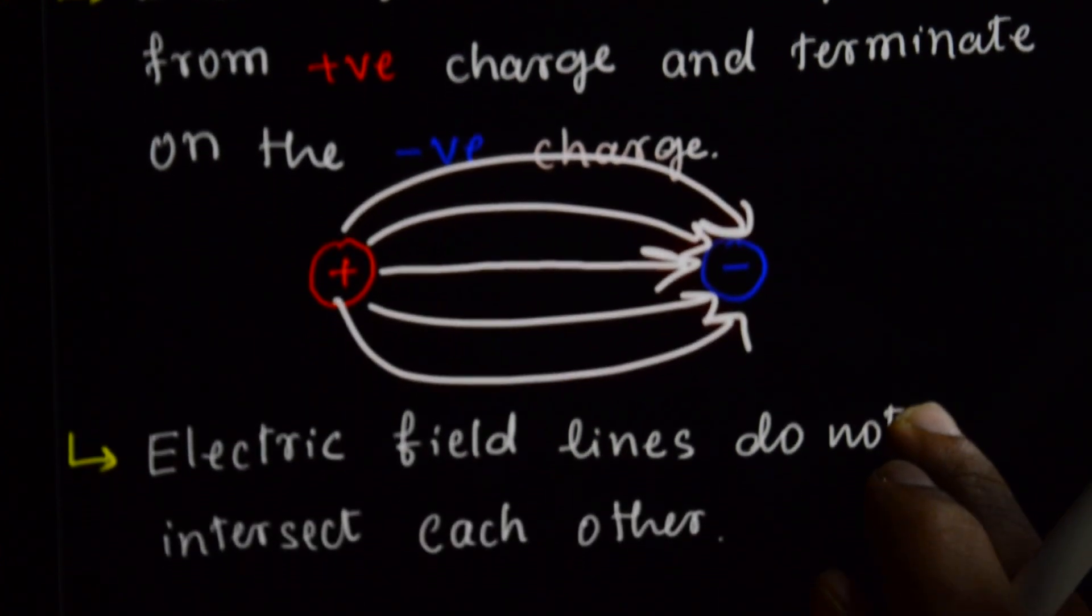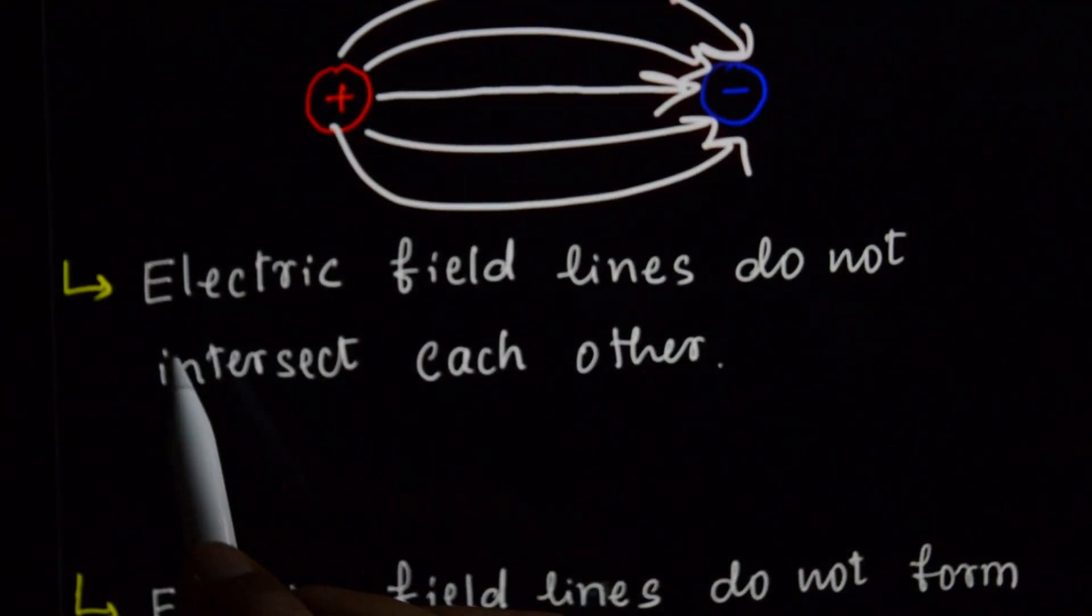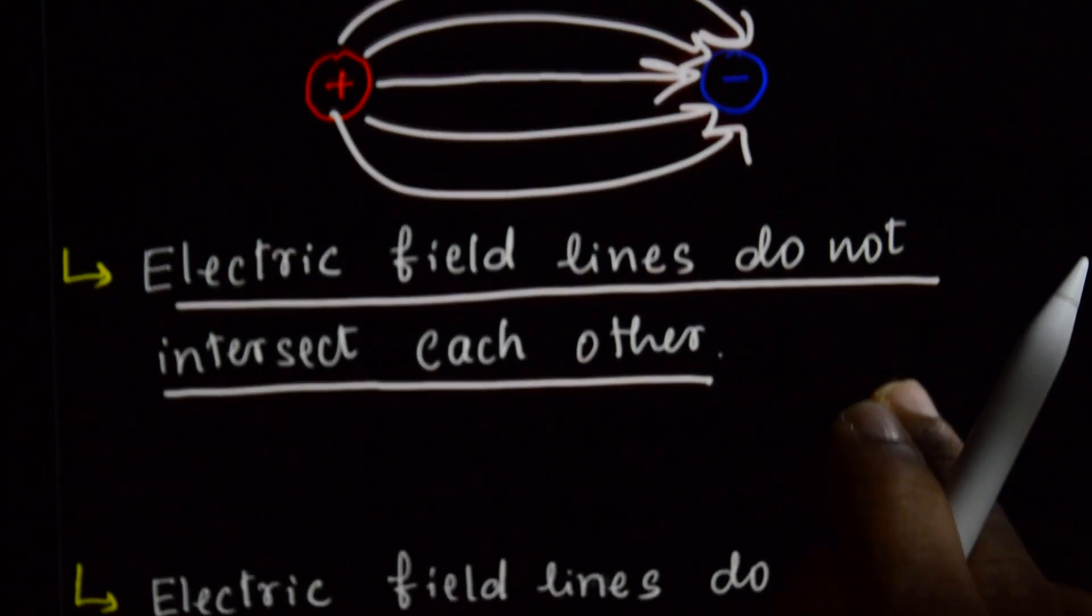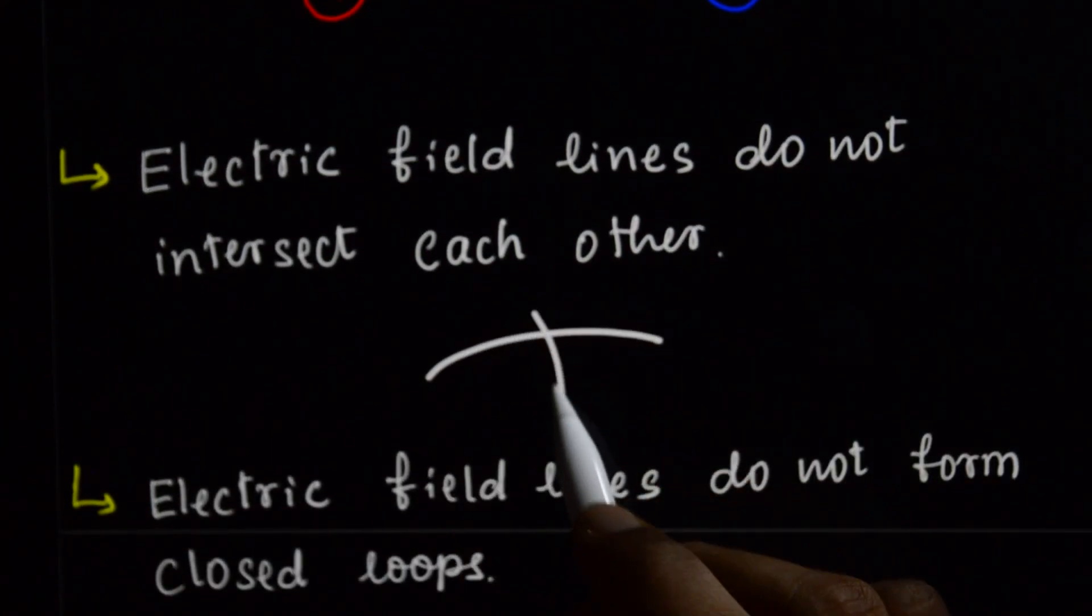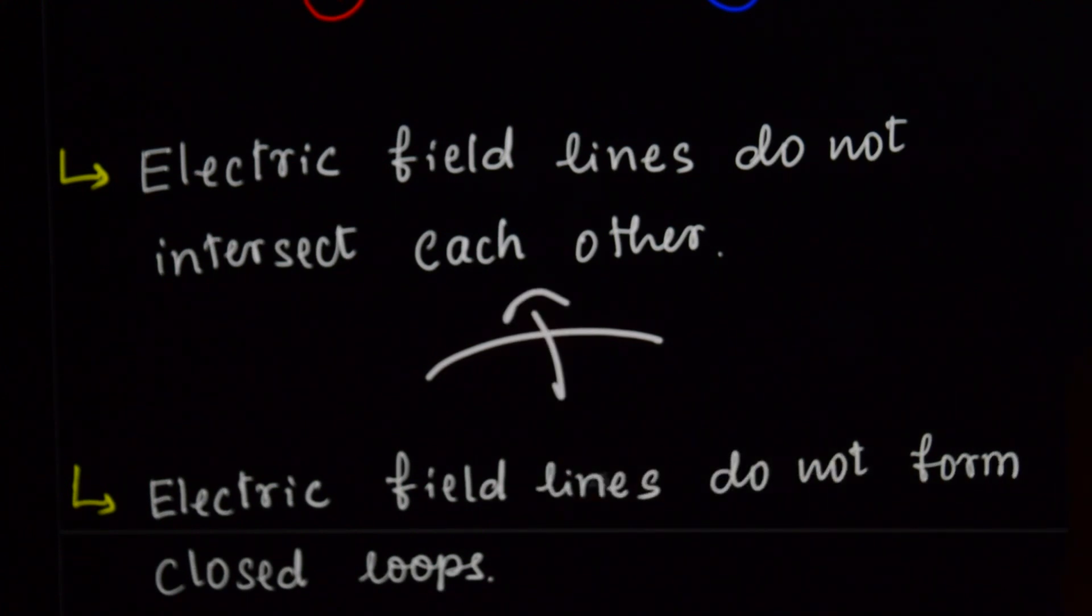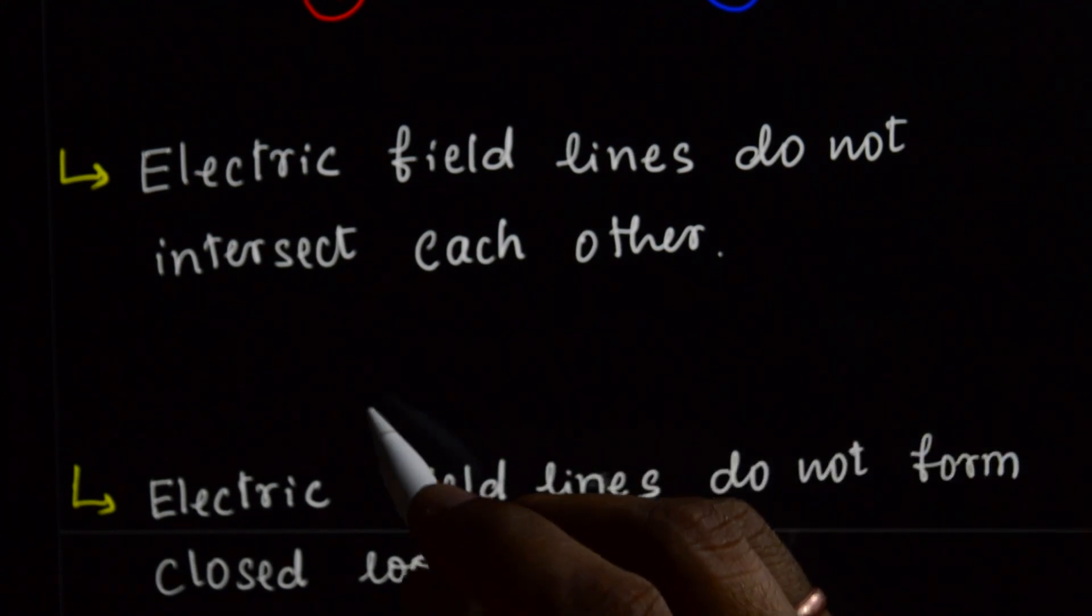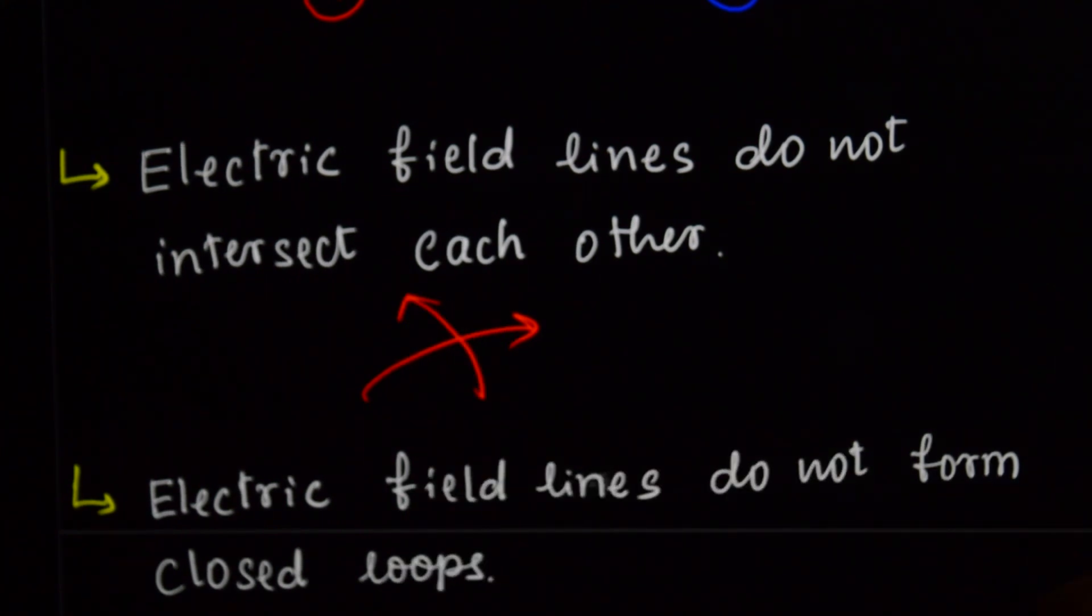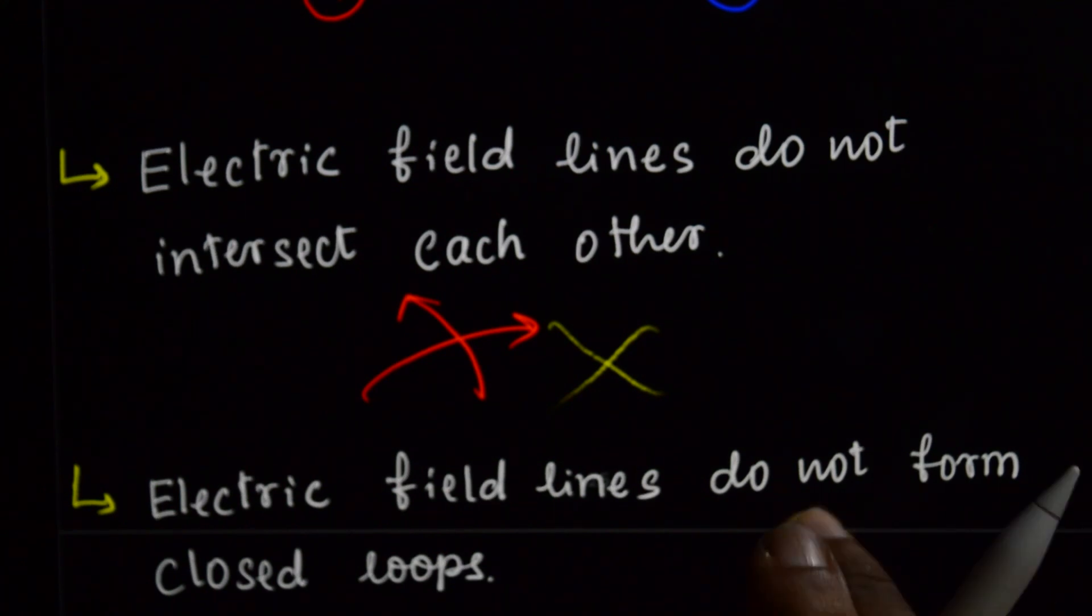And second property. Electric Field Lines do not intersect each other. Electric Field Lines will not cross. Here the second property is two Electric Field Lines, they never intersect each other.